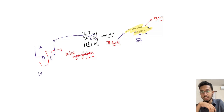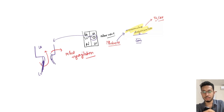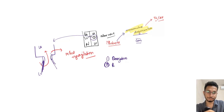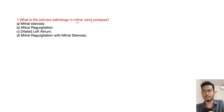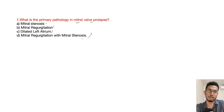The chordae tendineae are attached to the valves, and due to the prolapse there is either elongation, redundancy, or rupture leading to prolapse of the mitral valve. Coming to the question: what is the primary pathology in mitral valve prolapse? Options include mitral stenosis, regurgitation, dilated left atrium, mitral regurgitation, and tricuspid stenosis. The answer is obviously mitral regurgitation.